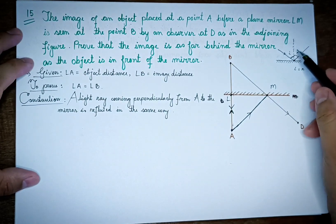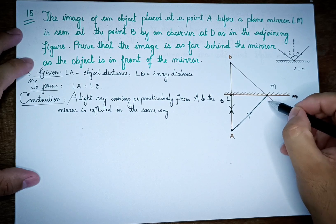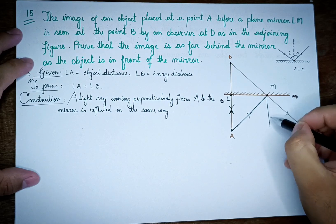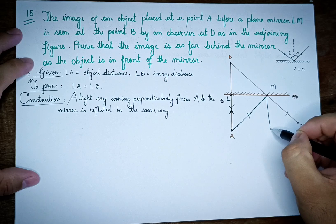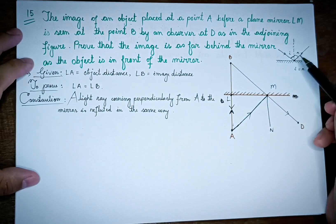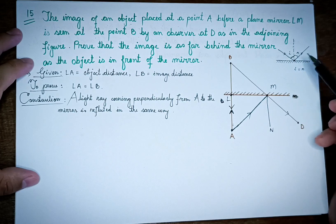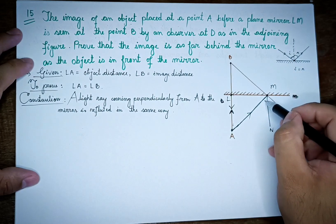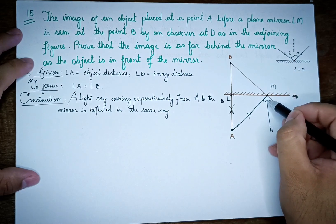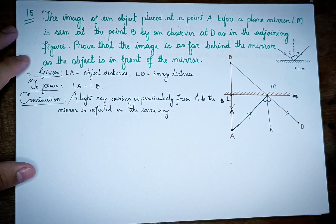The normal amount at M is MN. MN is the normal to the mirror at the point M. The angle of incidence and the angle of reflection are on either side of this right-angle normal.